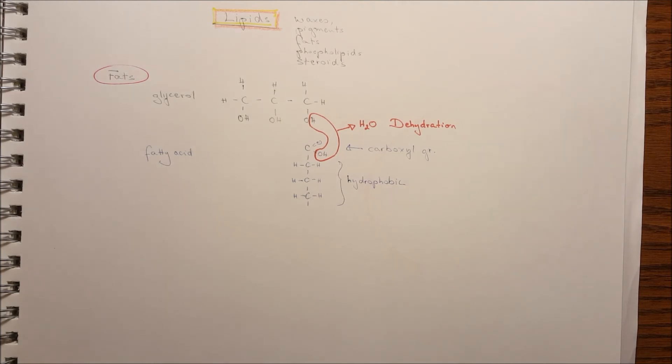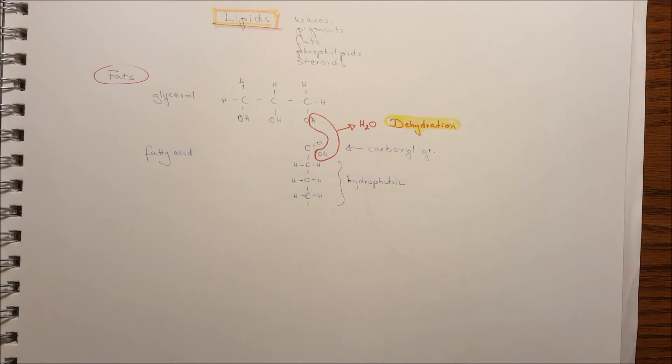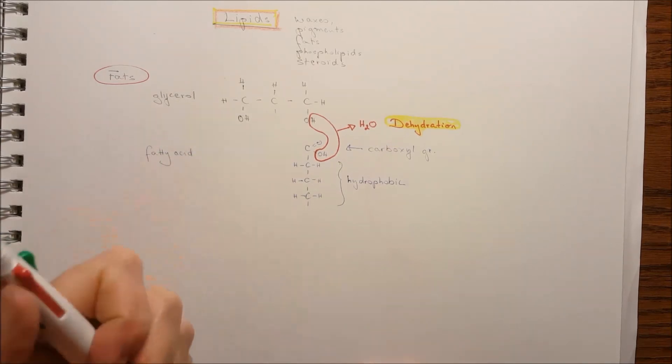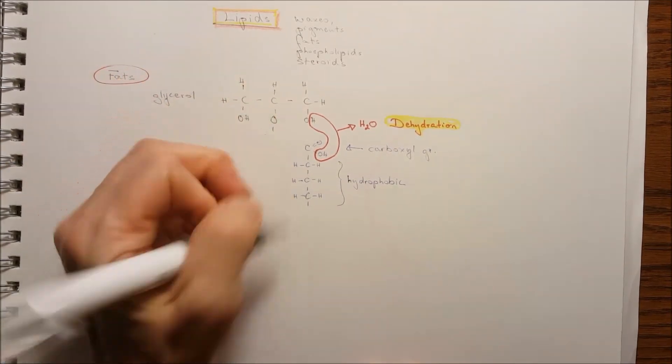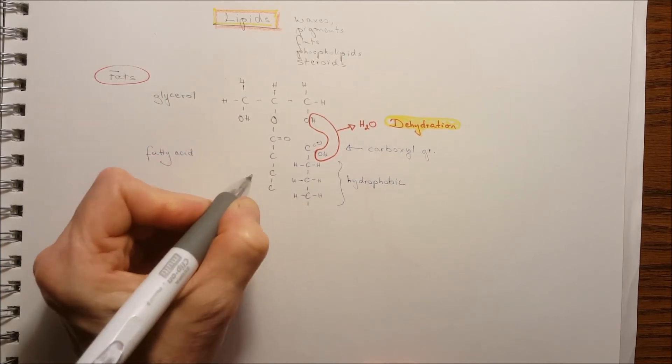This carboxyl group with the hydroxyl group forms water and it's a dehydration reaction. The tail of the fatty acid is hydrophobic because we know that the carbon doesn't have that much of electronegativity to unfairly share the electron with the hydrogen. That's a side note. Here I'm going to draw how they form the bonds, the fatty acid with the glycerol.